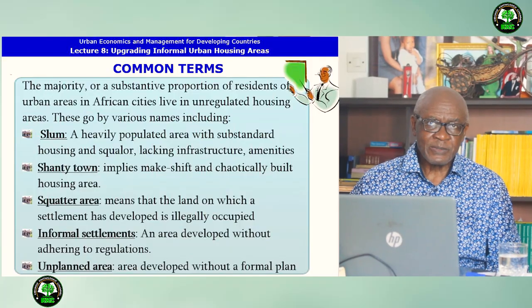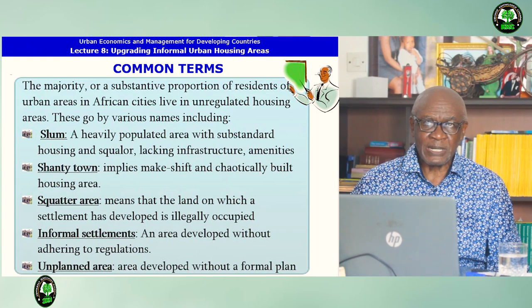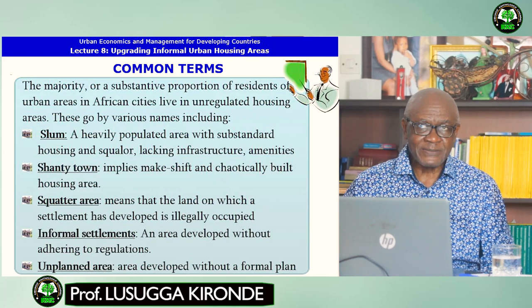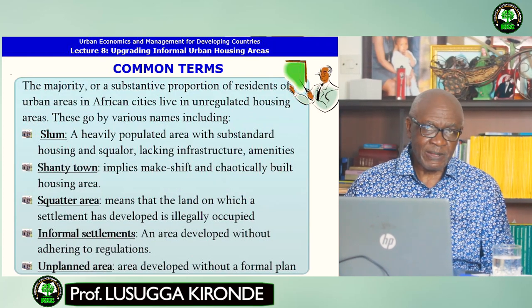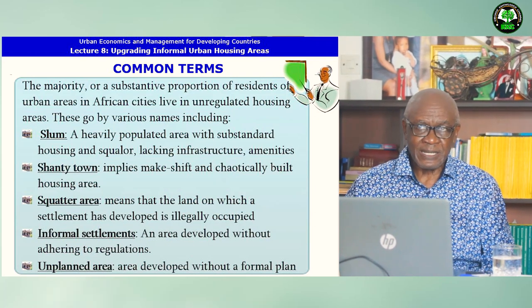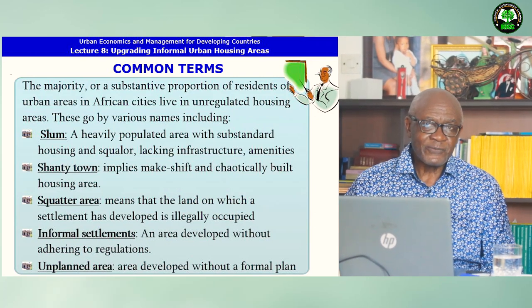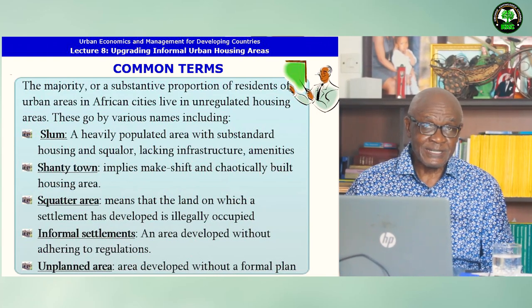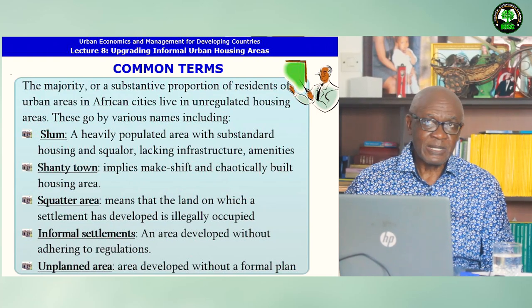We need to know some common terms that are used to describe these areas. A slum is a heavily populated area with substandard housing lacking infrastructure and amenities. A shanty town implies a makeshift and chaotic liability housing area. A squatter area means that the land on which the settlement has developed was illegally occupied. Informal settlements is an area developed without adhering to regulations, and an unplanned area would be an area developed without a formal land use plan.